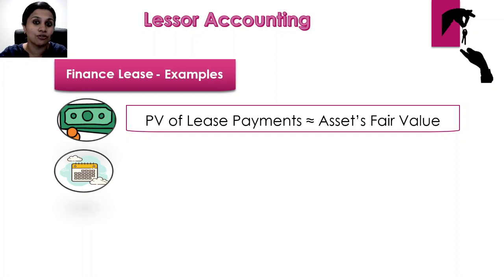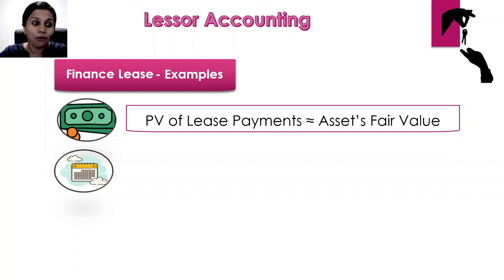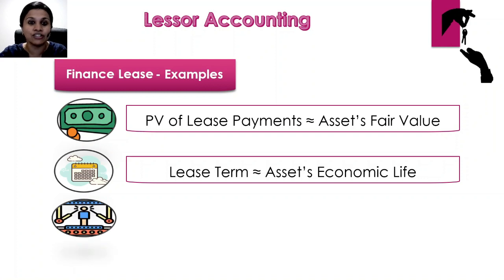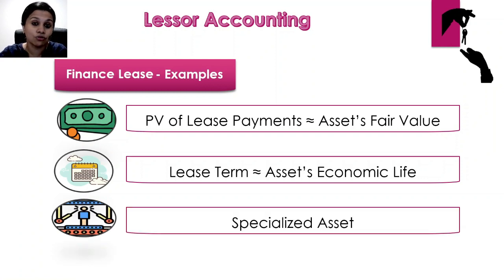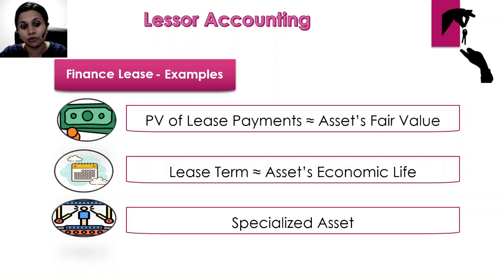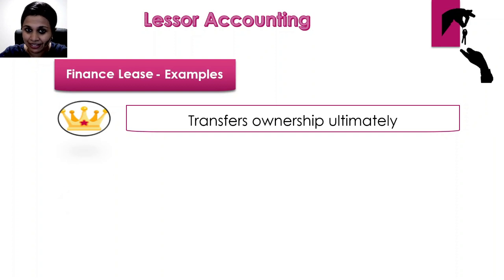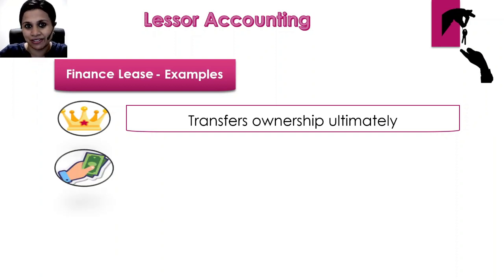These conditions could exist individually or in combination. The second condition is the duration of the lease — if the lease term covers substantially all of the economic life of the asset, it could be considered a finance lease. The third is the nature of the asset — if the asset is so specialized that only this particular lessee can use it, it would also be considered a finance lease. The fourth is ownership — when the lessor transfers ownership of the underlying asset to the lessee at the end of the lease term, it is a finance lease.